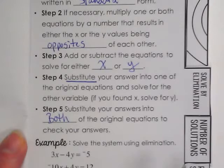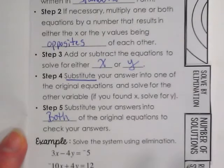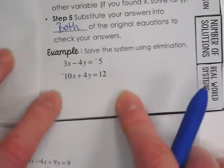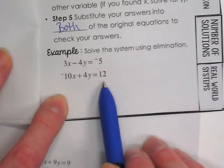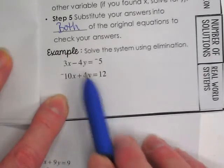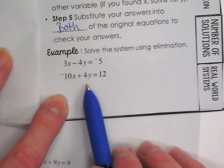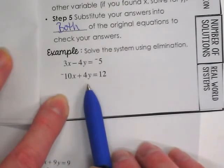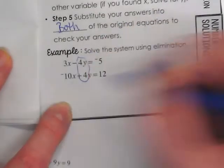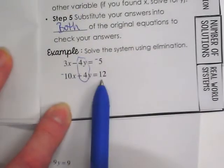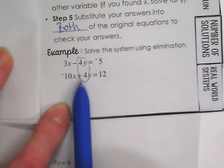Okay, so when I look at 3x minus 4y equals negative 5. Oops, sorry. Thank you for letting me know it wasn't on the screen. And negative 10x plus 4y equals 12. I see negative 4y, positive 4y. That's the beautiful part of this if it's already done for you. You don't have to do the step where you're multiplying anything. I can just eliminate those two. So, they're in standard form. I see that I already have terms I can eliminate.